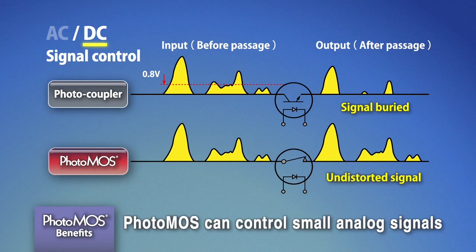Even with a small-voltage signal, even if it is an analog signal, MOSFET can control signals without distortion.